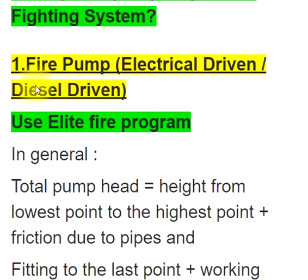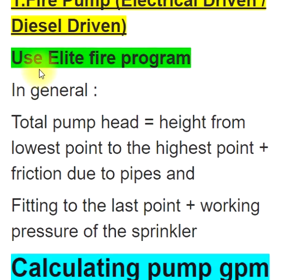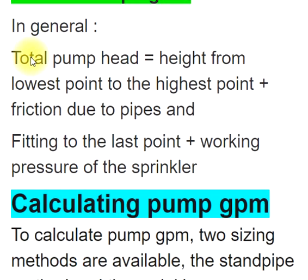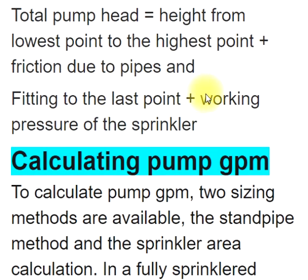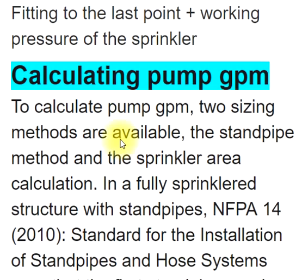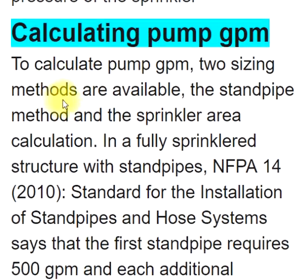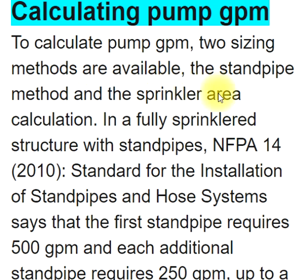Fire Pump — electrical driven or diesel driven. In general, total pump head equals the height from the lowest point to the highest point, plus friction due to pipes, fittings to the last point, and working pressure of the sprinkler. To calculate pump GPM, two sizing methods are available: the standpipe method and the sprinkler area calculation.